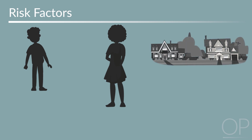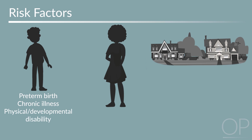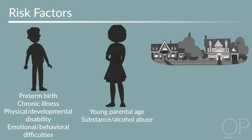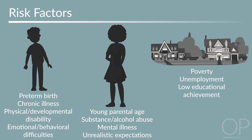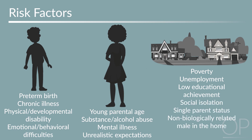Child-related factors include preterm birth, chronic illness, physical or developmental disability, and emotional and behavioral difficulties. Caregiver-level factors include young parental age, substance or alcohol abuse, mental illness, and unrealistic expectations for child behavior and development. Environmental factors include poverty, unemployment, low educational achievement, social isolation, single parent status, non-biologically related male living in the home, and history of intimate partner violence.